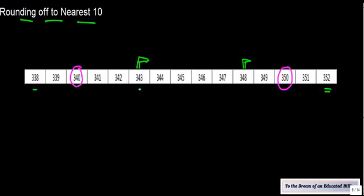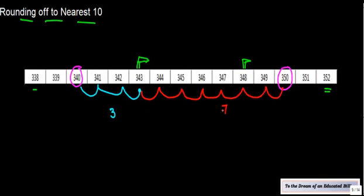So let's say if I have 343, how far is 343 from 340? It is one, two, three, three places right. And if I talk about 350 it is how many places? One, two, three, four, five, six, seven, seven places. So which one is closer? Obviously 340. So if you talk about 343 the number which is a multiple of 10 and which is closer to this number is actually 340.